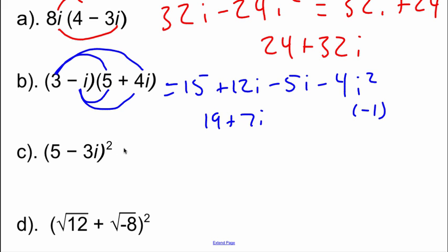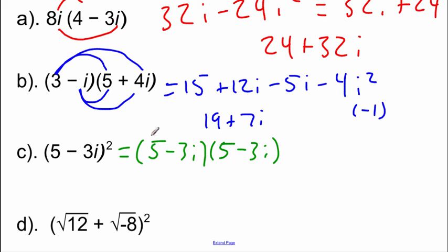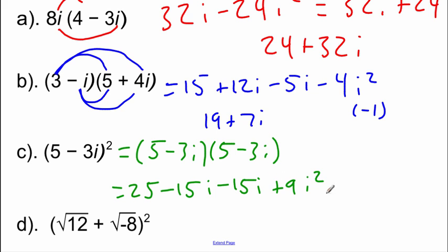Example c is five minus three i squared. Squaring means multiplying by itself, so this is five minus three i times five minus three i. FOILing: five times five is 25; five times negative three i is negative 15i; five times negative three i again is another negative 15i; negative three i times negative three i is positive nine i squared. Combining: negative 15i and negative 15i is negative 30i; nine i squared is nine times negative one, which is negative nine; and 25 plus negative nine is 16. Final answer: 16 minus 30i.